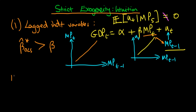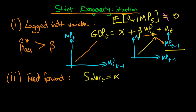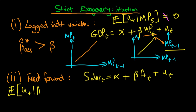The second example is what we spoke about as a sort of feed-forward situation. The example was where sales at time t are determined by the level of spend on advertising at time t, plus some error u_t. Strict exogeneity requires that the expectation of u_t given advertising at time s equals zero for all s.